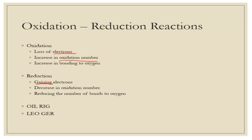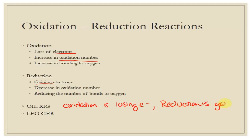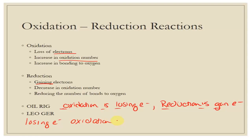The way I remember this is one of two mnemonics — choose one. OIL RIG: Oxidation Is Losing electrons, Reduction Is Gaining electrons. Or Leo Gurr: Losing Electrons is Oxidation, Gaining electrons is Reduction. Both say the same thing, so pick whichever one you like.